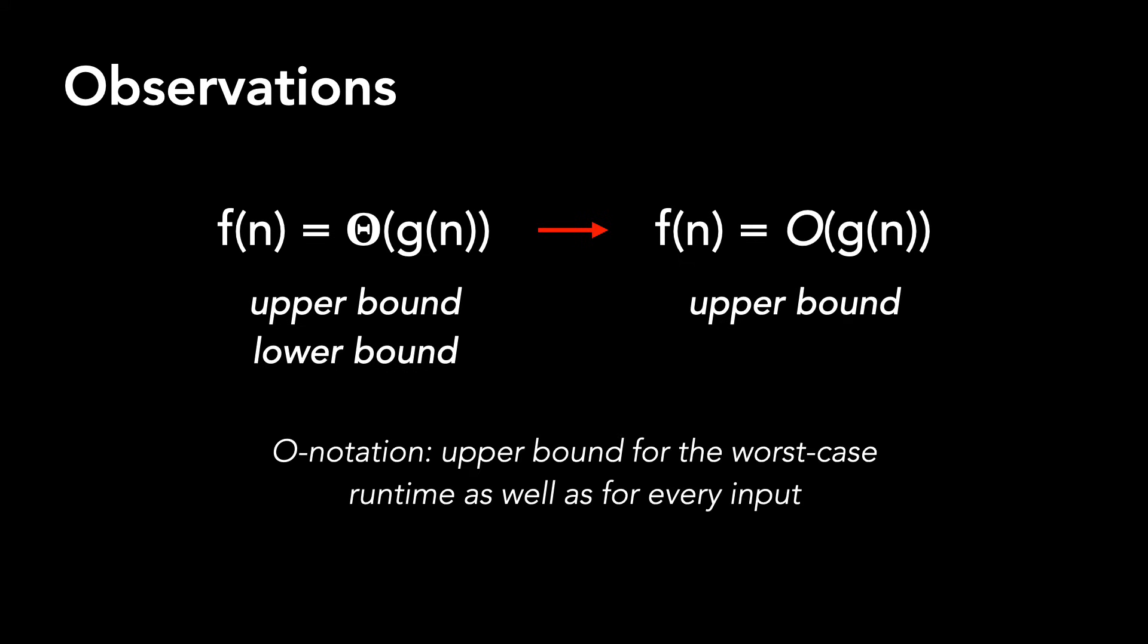Big O is usually the choice for algorithm analysis because we can use it as an upper bound for the worst case running time of an algorithm, as well as for every input, not just the worst case, since we're looking only at upper bound. More on this at the end.